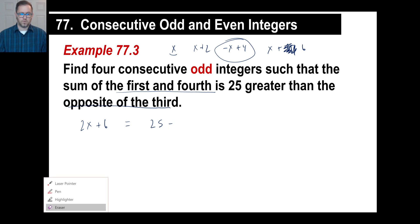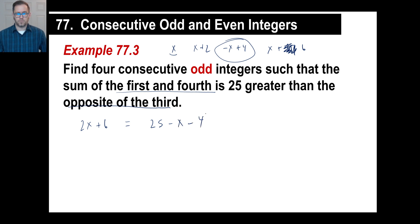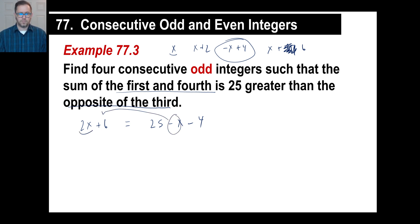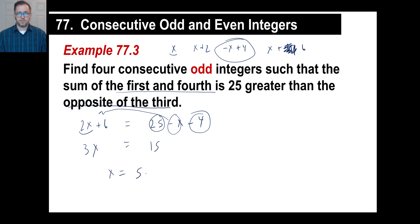Moving 2x to the right gives us 3x. On the right side: 25 minus 4 is 21, then 21 minus 6 is 15. So x equals 5. Is it an integer? Yes. Is it odd? Yes — very odd. So 4 consecutive odd integers starting at 5: the answer is 5, 7, 9, and 11.